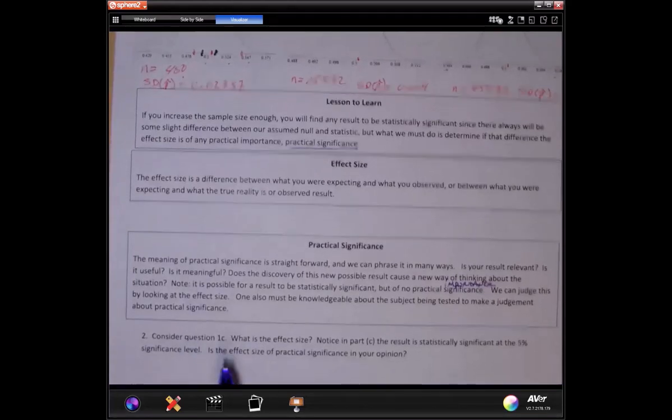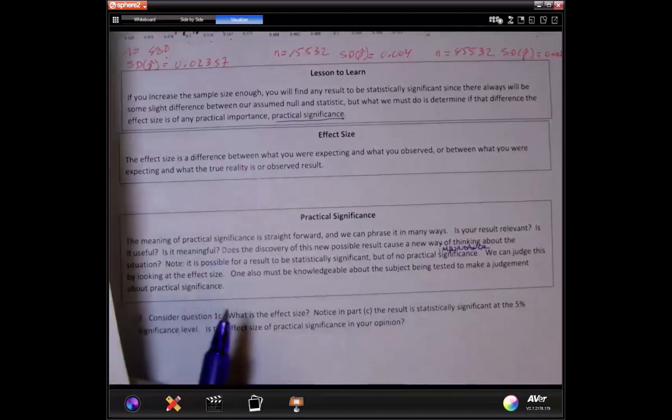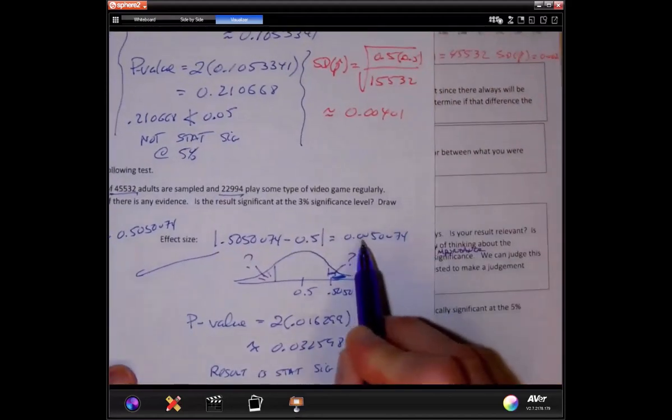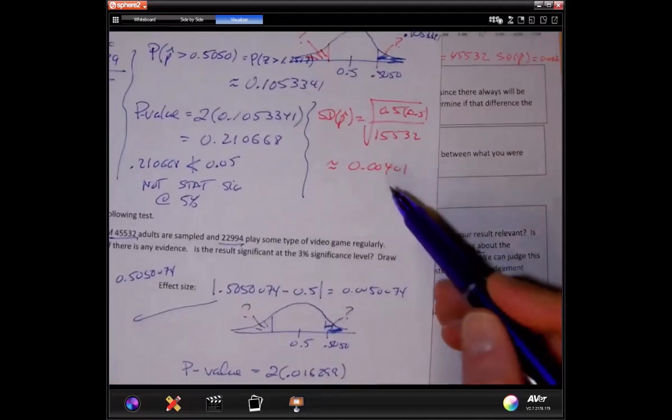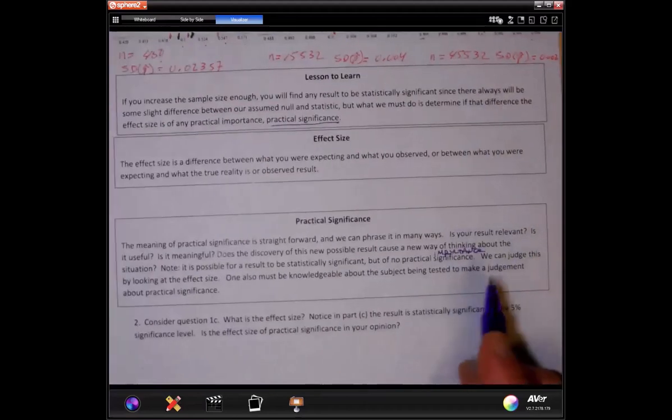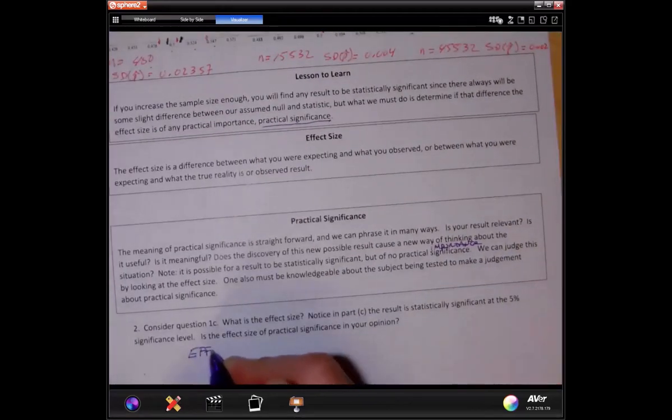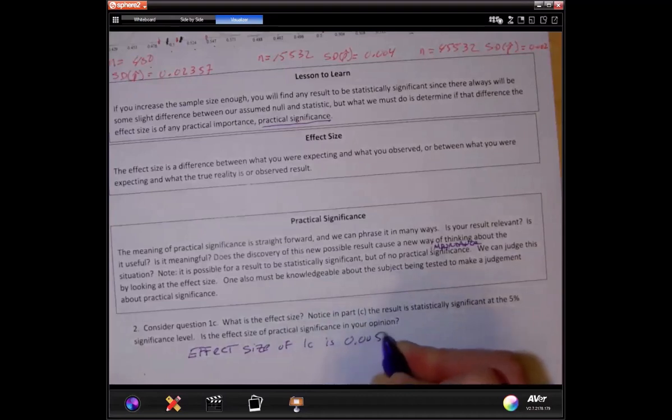So consider question 1c. What is the effect size? When we look at the final question here, the effect size of the last one. Let's get that in here. 1c, there it is. This was the effect size: 0.0050074, pretty much the same as the other ones. The effect size in C, which really was about the same size as all the rest of them, is 0.0050074. That's what it is.